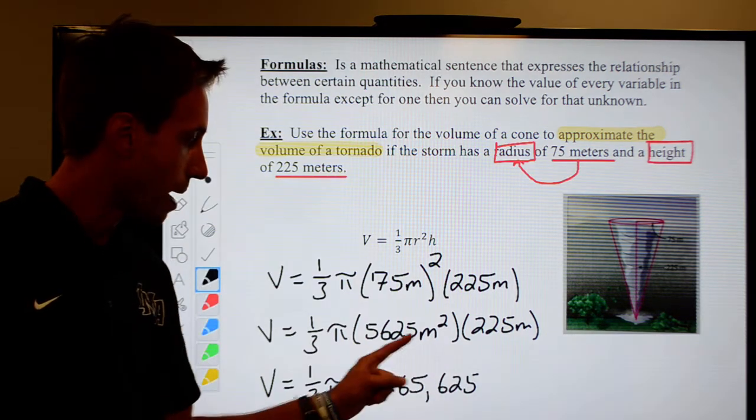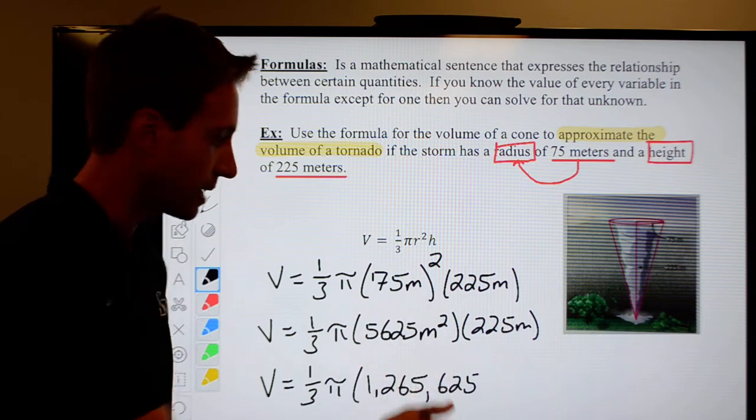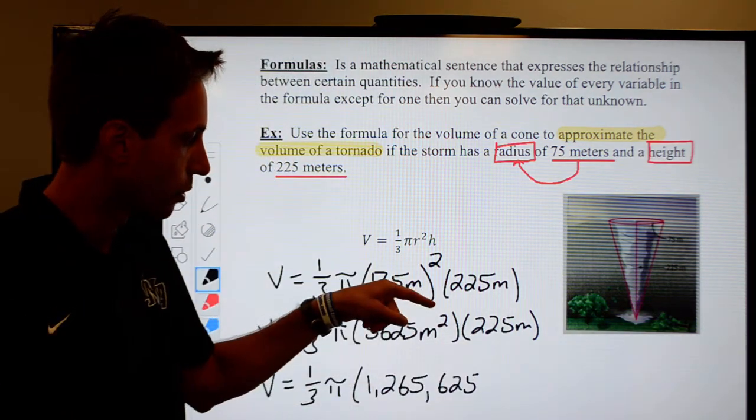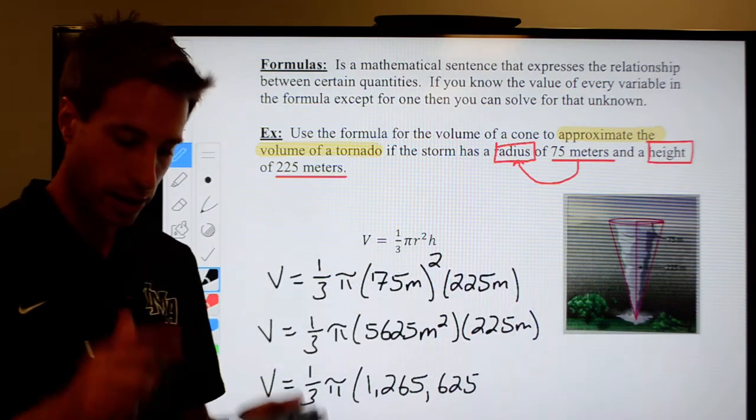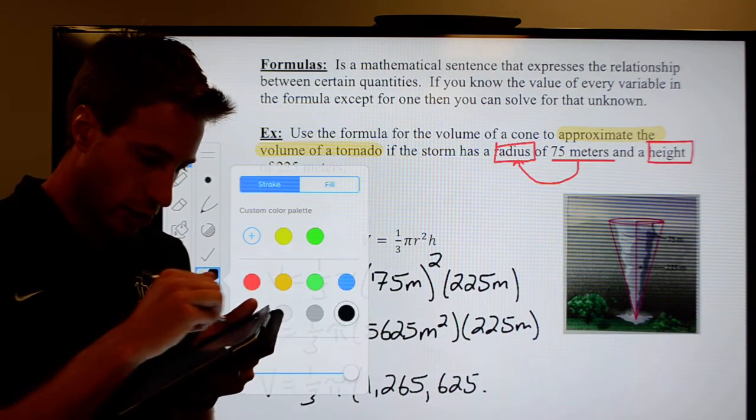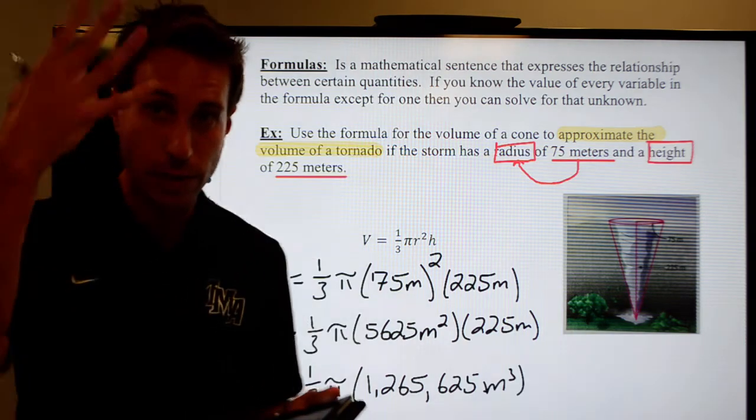1,265,625 and then of course your units. We are multiplying m squared times m. Anytime you have like bases m and m, you add the exponents 2 plus 1. Means I have meters cubed and those of you who are in geometry, that should make perfect sense. Hopefully that brings back, right.